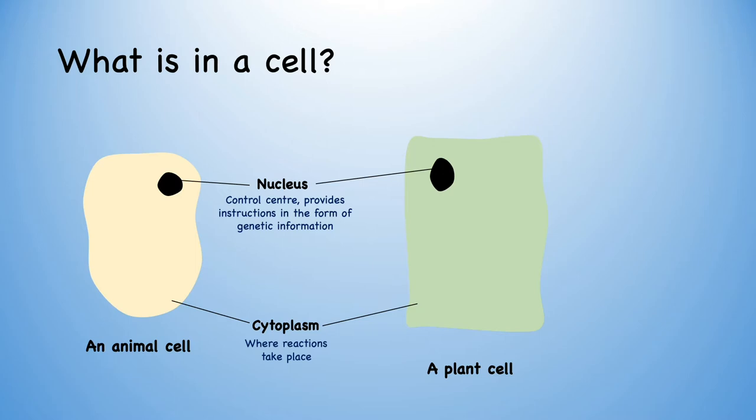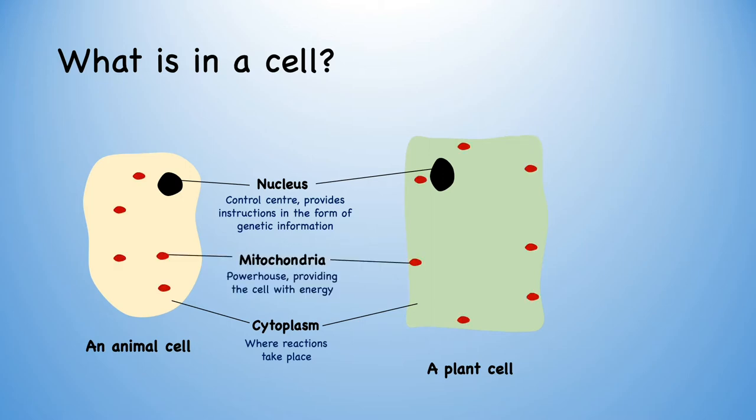Our cells have very important jobs to do, and for that they need some energy. So our cells contain mitochondria. These are just like big powerhouses, providing the cell with energy to move, break things down like food, and build new things like bone. Our cells also need something to keep all of this inside them and prevent them swapping and changing contents with other cells. For this, they have a cell membrane.